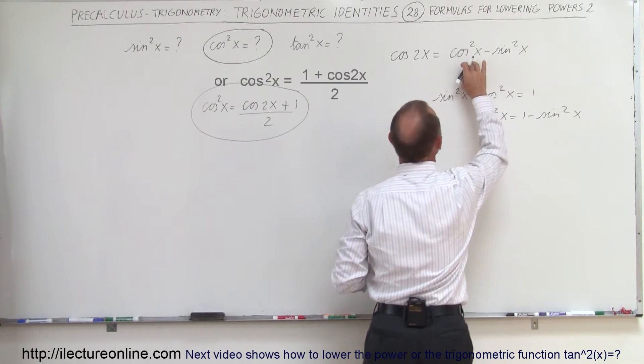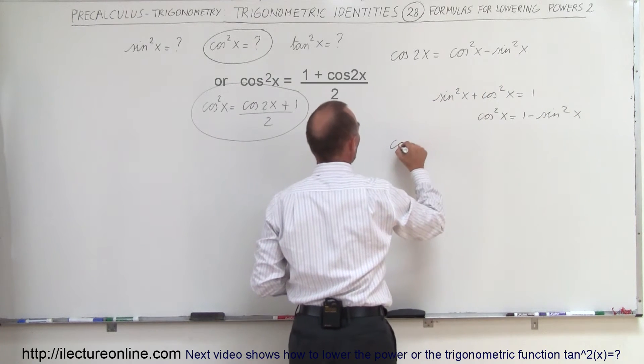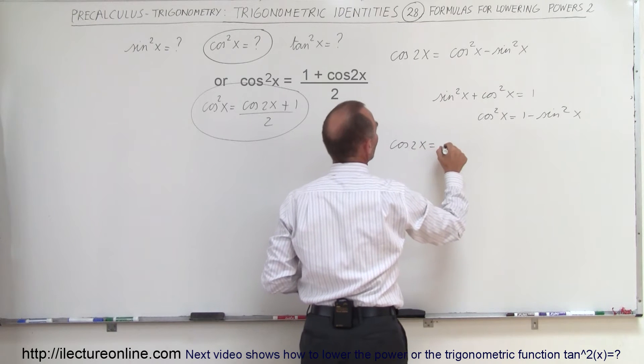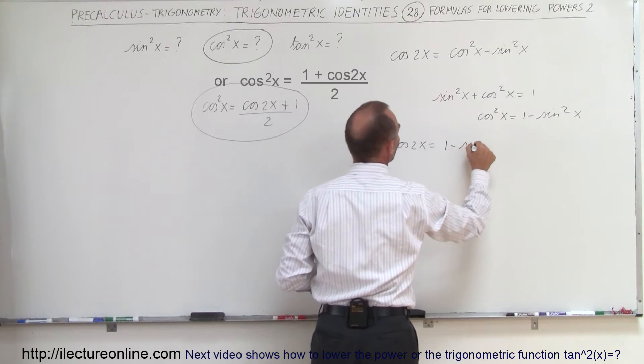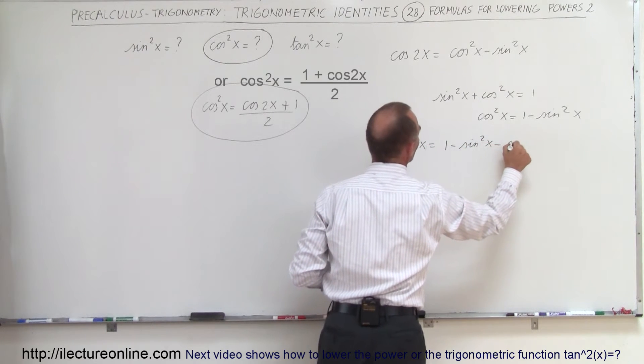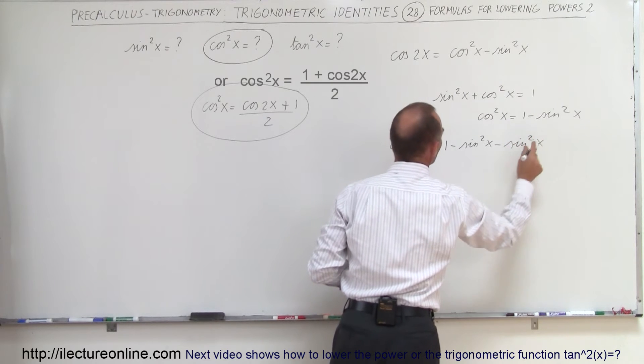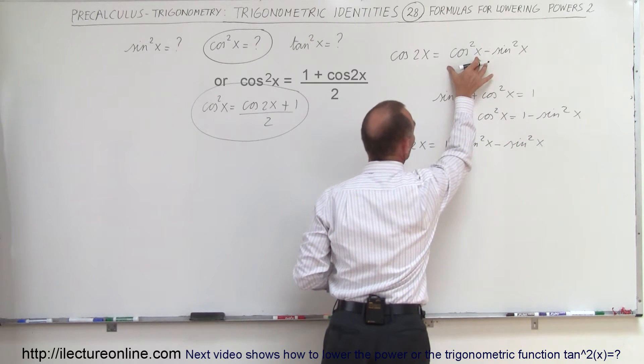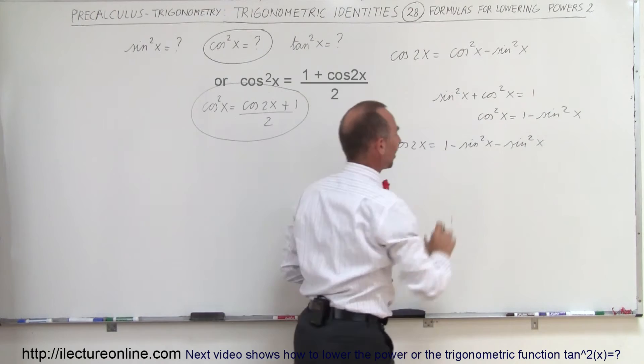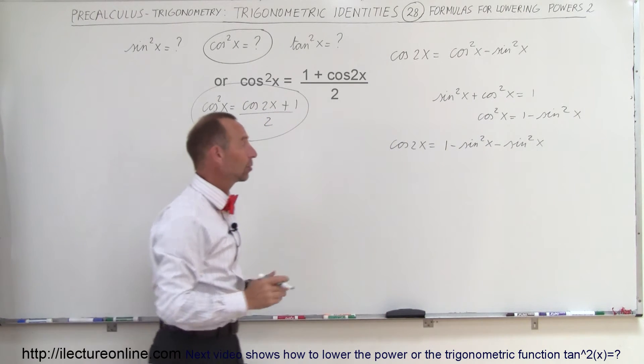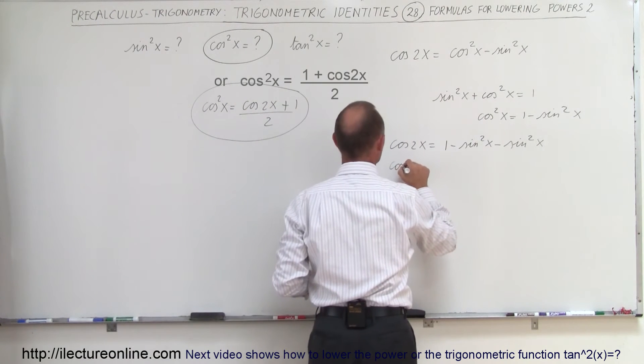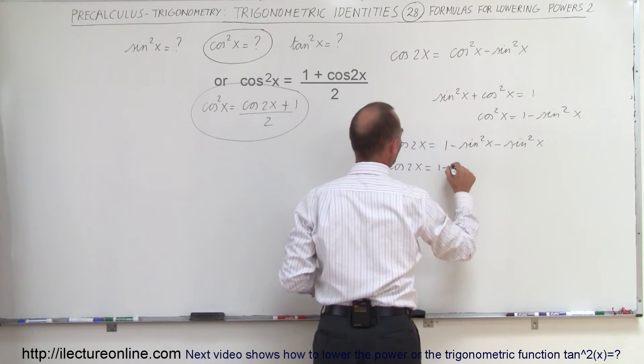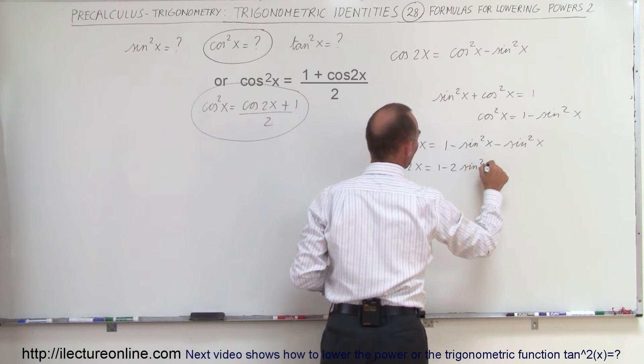And we can then substitute that in for this equation, and we end up with the cosine of 2x is equal to 1 minus the sine square of x minus the sine square of x. So we replace the cosine square of x by 1 minus the sine square of x. We can now combine the like terms, so we have the cosine of 2x is equal to 1 minus 2 times the sine square of x.